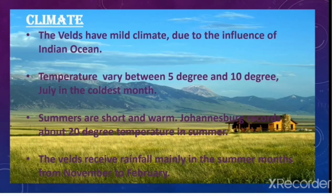Climate of the velds: the velds have a mild climate due to the influence of the Indian Ocean. Temperatures vary between 5 to 10 degrees. July is the coldest month. Summers are short and warm — Johannesburg records about 20 degrees temperature in summer. The velds receive rainfall mainly in the summer months from November to February.